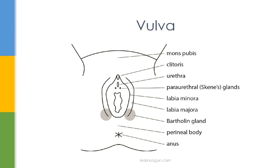What we'll be talking about first is the vulva. The vulva consists of all the structures from the mons pubis to the perineum. Some of the structures include the mons pubis, the labia minora, majora, the clitoris, Bartholin's glands, vaginal opening, urethral opening, and Skene's glands, also known as the periurethral glands.